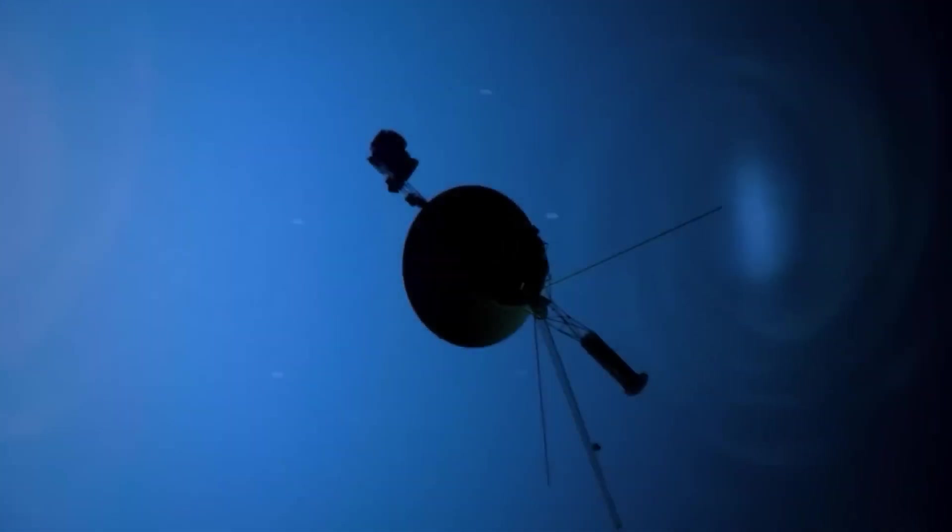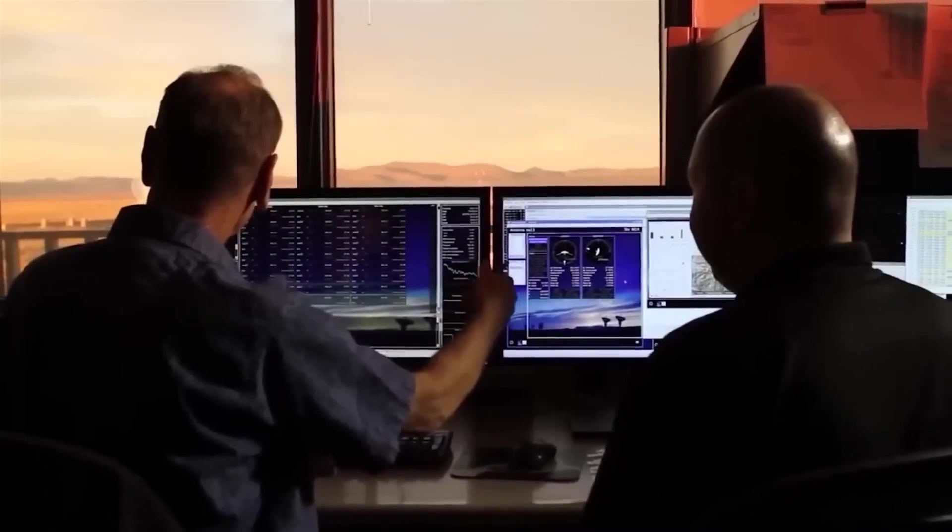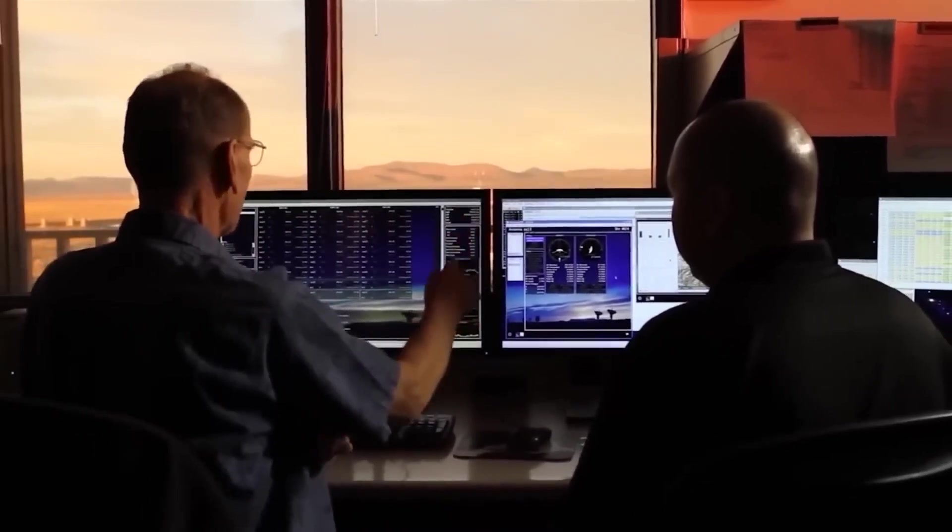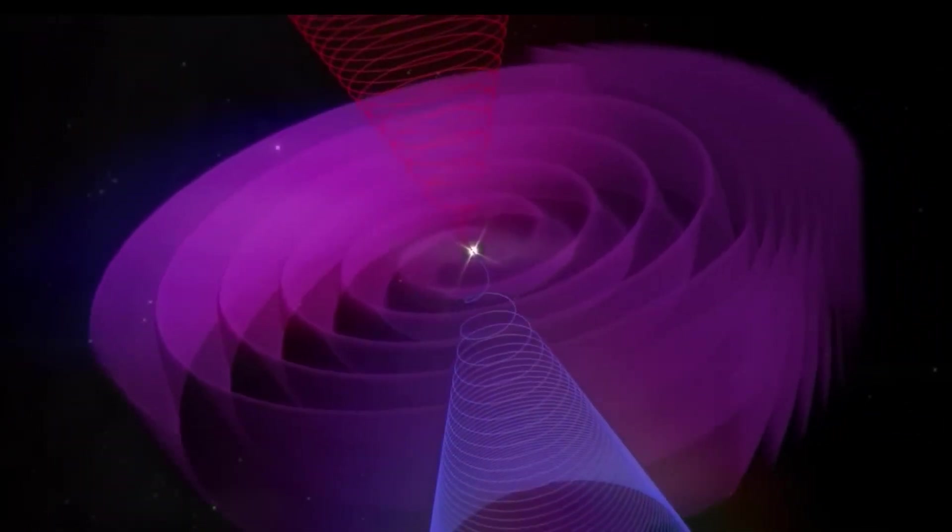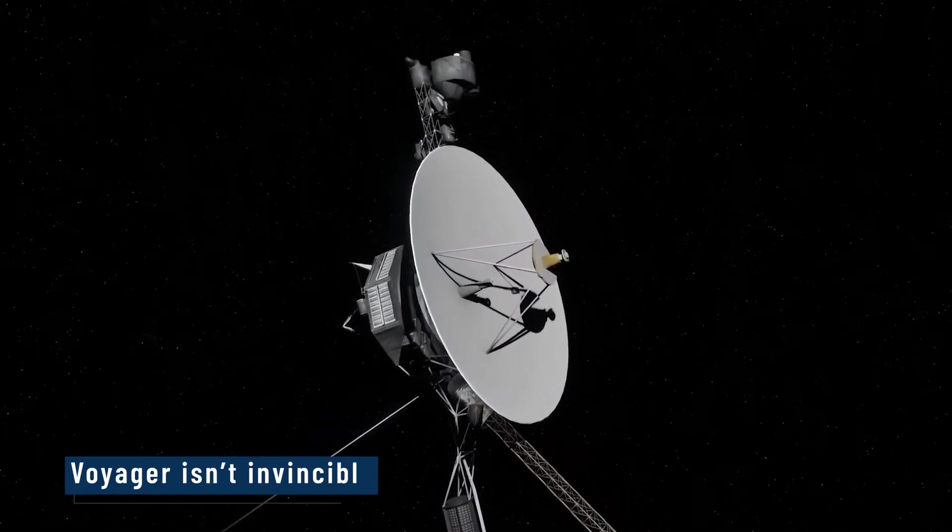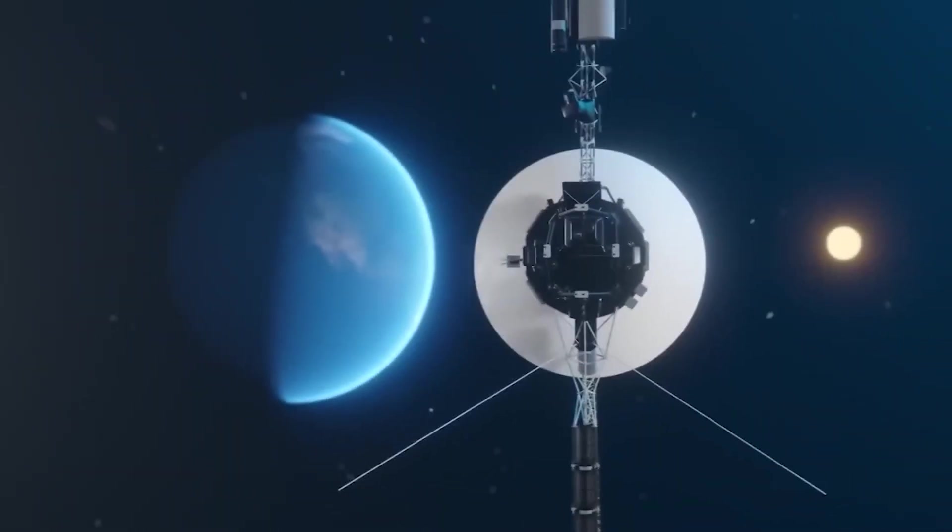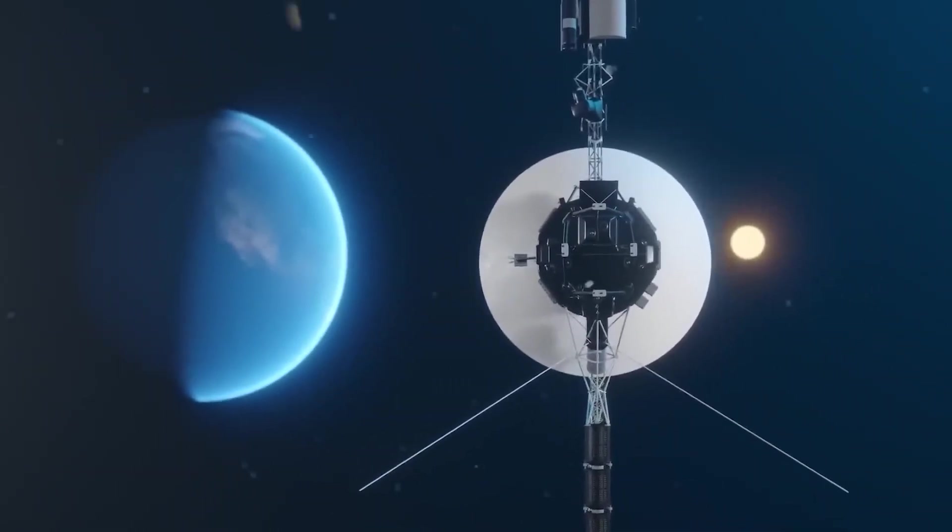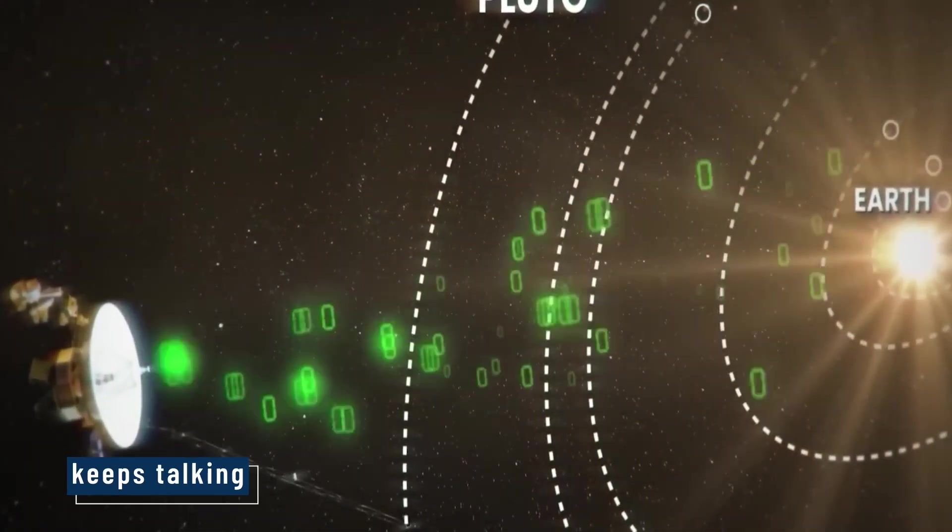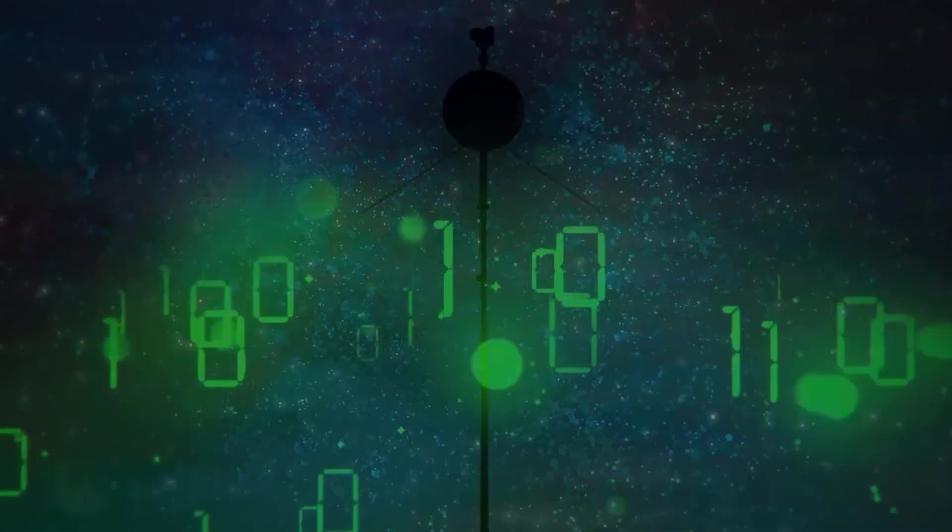Eventually, NASA managed to work around the glitch by rerouting data through a backup system. But to this day, they don't fully understand what caused the problem. It was a close call, one that reminded everyone that Voyager isn't invincible. It's aging, it's alone, and it's getting harder to understand. And yet, somehow, it keeps talking through the noise, through the nonsense. It keeps whispering back across the stars.